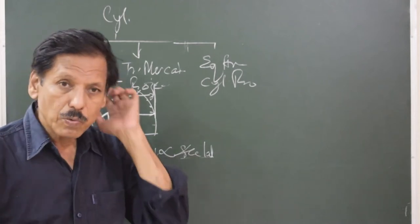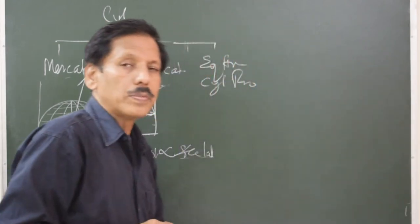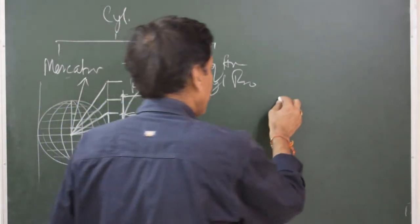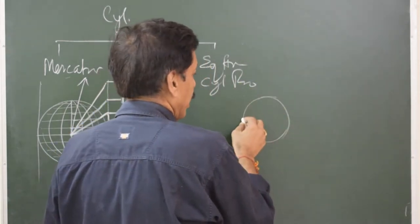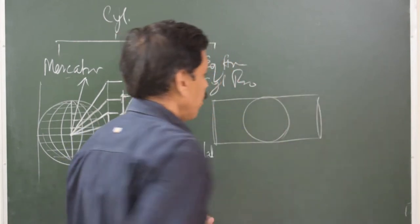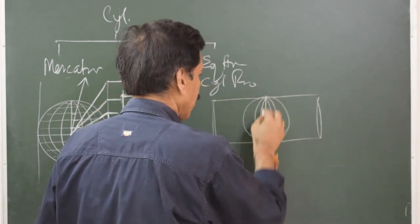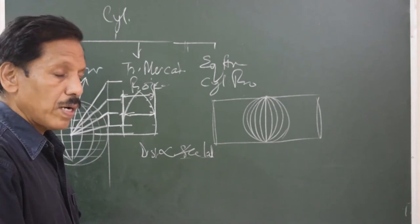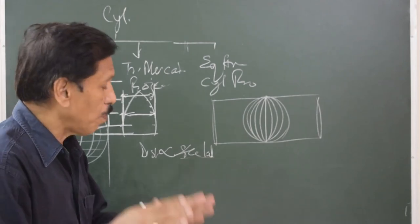Right now we are just glancing over these projections. In the transverse Mercator chart, the cylinder is turned 90 degrees. Instead of the cylinder being tangent to the equator, the cylinder is now tangent to one of the meridians and its inferior meridian. The areas within a narrow band of the tangenting meridian and its inferior meridian are very accurately projected. Wherever the cylinder is tangent to the globe, the projection will be very accurate and distortion will be very small.